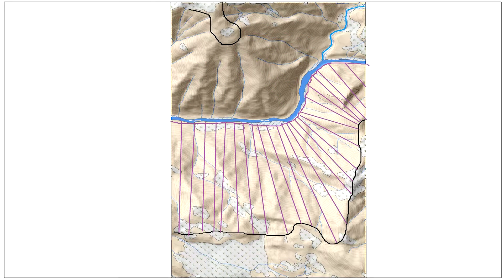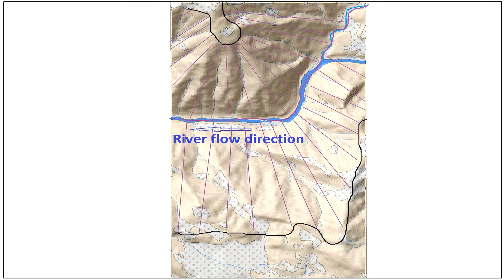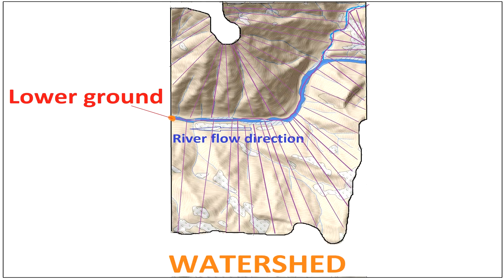If rainfall occurs on both flanks of the high ground, the runoff will flow to the lower ground and contribute to the river flow or drainage flow. This total area which is contributing to river flow or a drain is a certain special area which can be called a watershed.